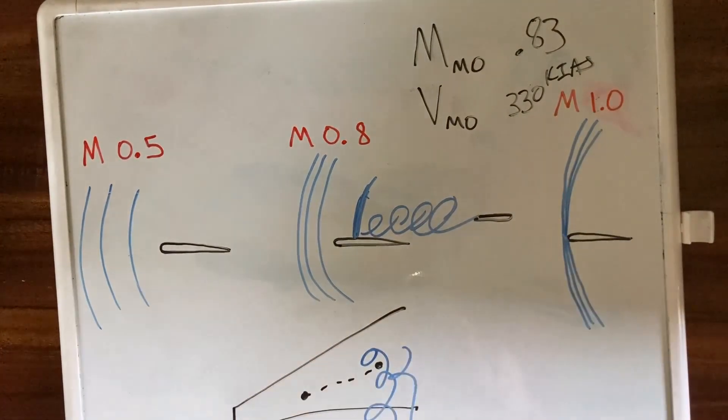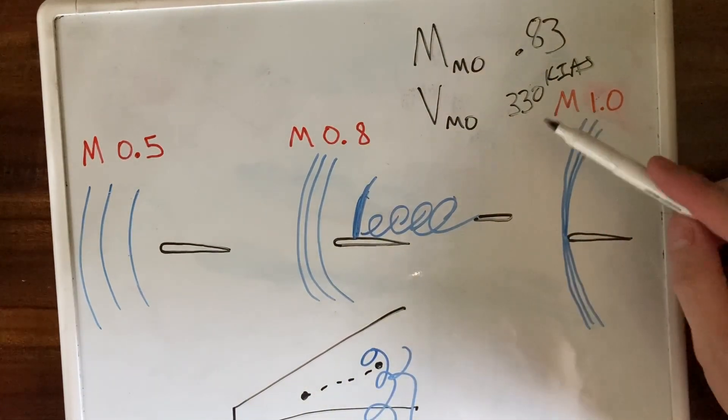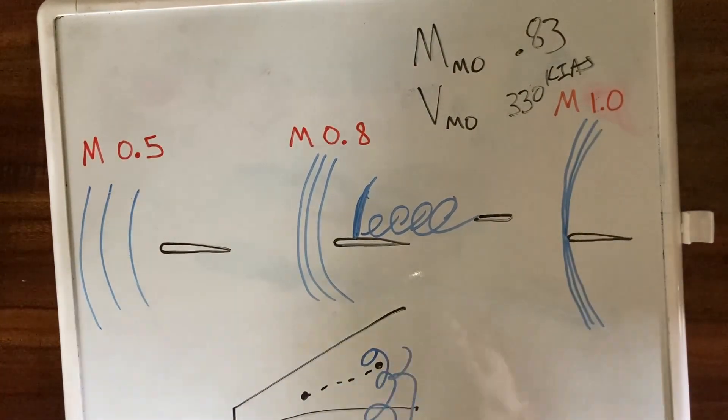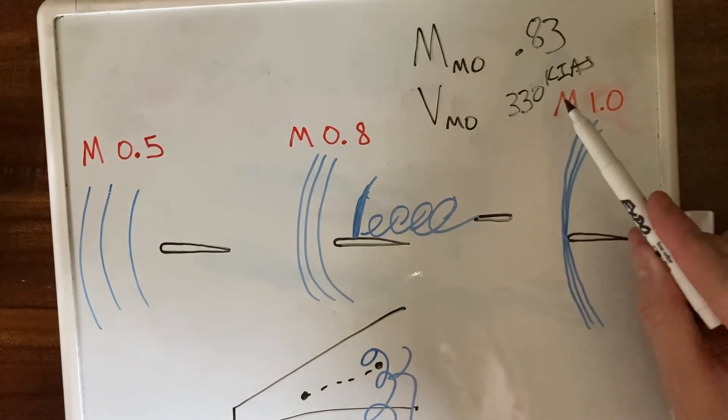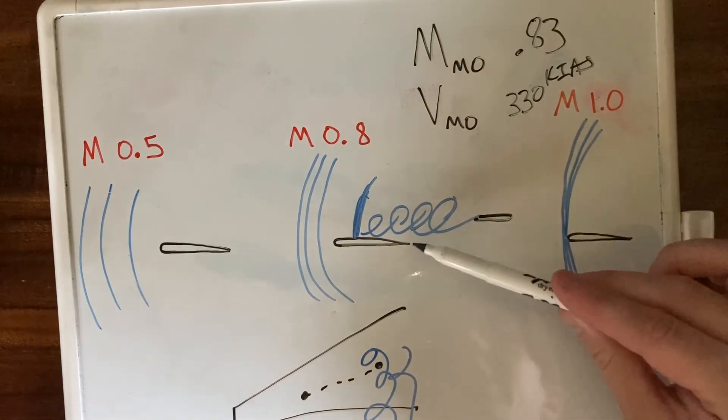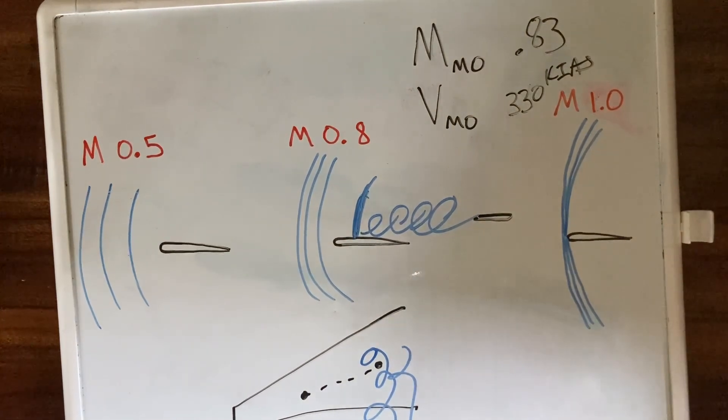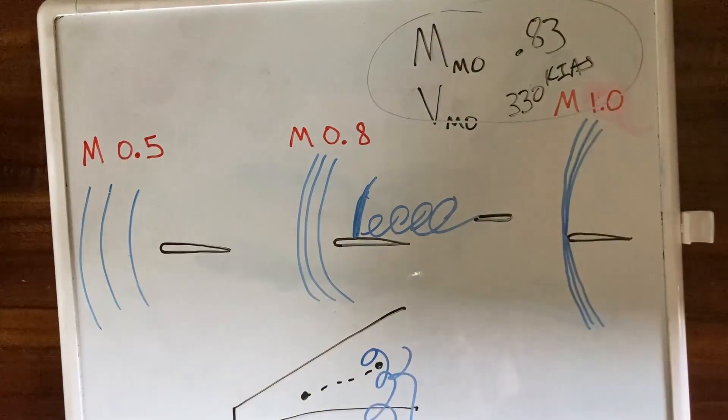Then we have VMO, which is mainly to prevent flutter of the control surfaces. VMO is in knots indicated airspeed. MMO is a Mach number. If you stay below this number, you avoid flutter. At higher speeds, the control surfaces, ailerons or other control surfaces, can flap like a flag flapping in the wind back and forth very quickly, and that can damage or destroy them. So we have these limits.